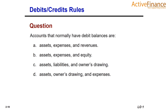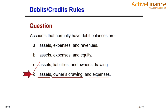The second question asks which accounts normally have a debit balance. We have learned that assets, owner's drawings, and expenses always normally show a debit balance. The correct option confirms this. Hopefully you found the right answer as well.